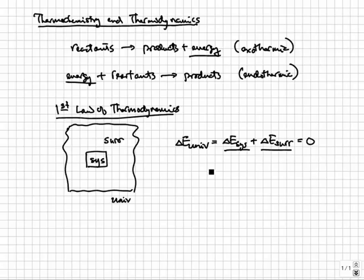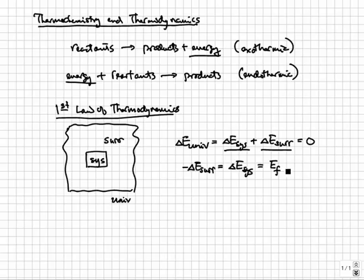Delta E system is the change in energy content of the system between the initial and final states, and delta E surroundings is the corresponding change in energy content of the surroundings. We can rewrite the first law to see that delta E surroundings must be exactly opposite to the system's. Delta E system is defined as the final energy minus the initial energy. So if the energy content goes down, delta E system is negative and the process is exothermic — the energy decrease in the system must be dumped into the surroundings.